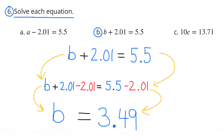B: b plus 1 and 1 hundredths equals 5 and 5 tenths. To get b by itself, we subtract 2 and 1 hundredths from both sides. b plus 2 and 1 hundredths minus 2 and 1 hundredths equals b. On the other side, 5 and 5 tenths minus 2 and 1 hundredths equals 3 and 49 hundredths. So b equals 3 and 49 hundredths.